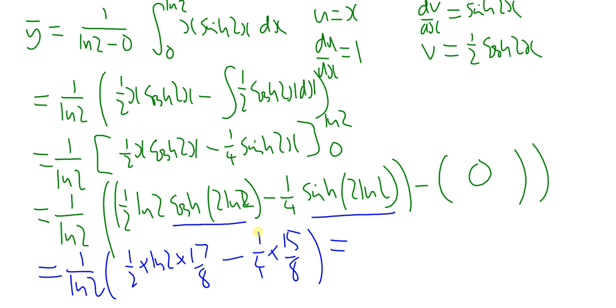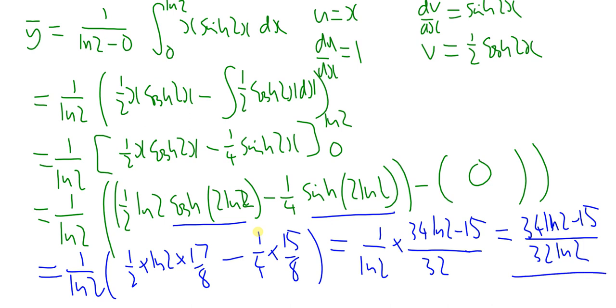My final answer is not going to be very nice. Inside the bracket, I can write it as a fraction with a common denominator. My first term's going to have 16 on the bottom, so I'll put 32 on the bottom. I can write it as 1 over ln2 times, putting it all over 32, you get 34ln2 minus 15. In its neatest possible form, 34ln2 minus 15 divided by 32ln2 is the exact value of that function between those points.